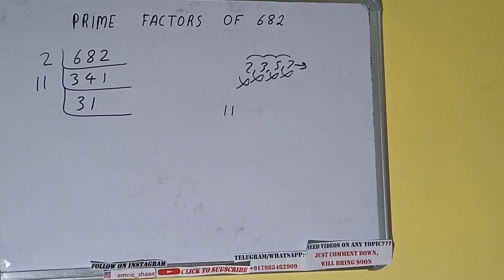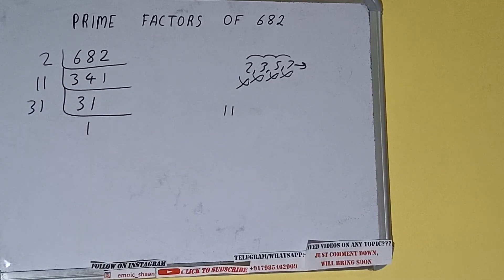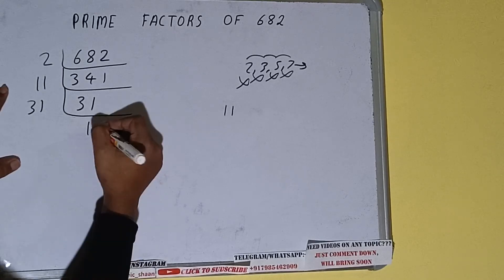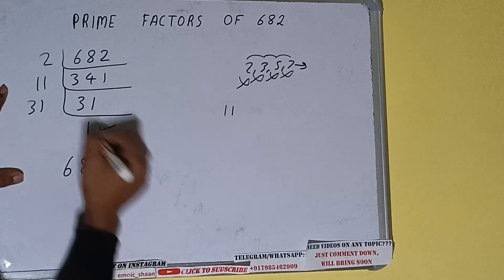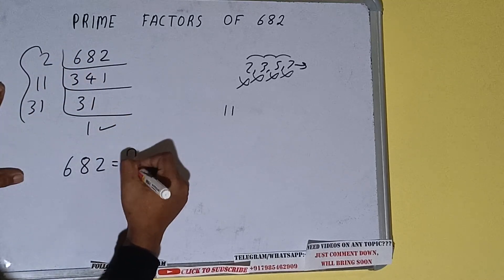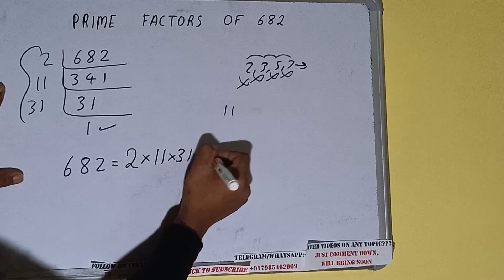And 31 is further not divisible by 11, and also 31 is a prime number, so it is only divisible by itself, that is 31. Once we do so we'll be getting 1. Once we get 1, we need to stop and do one last thing: the prime factors of 682 equals whatever we have on the left-hand side, that is 2 × 11 × 31. That will be the answer.